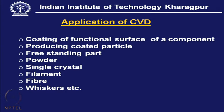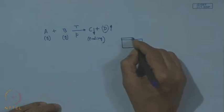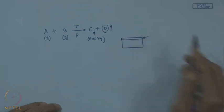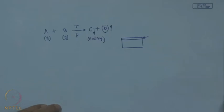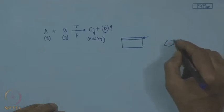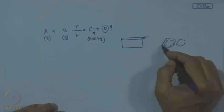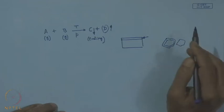The applications of chemical vapor deposition are various. It can be used directly as a coating on a substrate with some functional task. It can also be used for producing coated particles — certain particles can be coated by this CVD process, so the coating material can cover the particle.